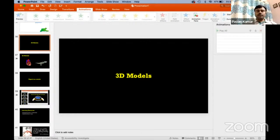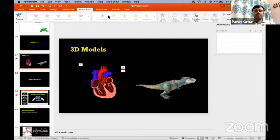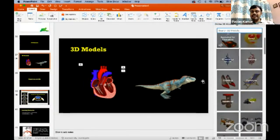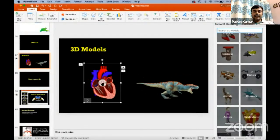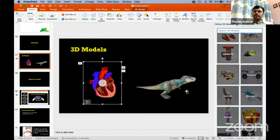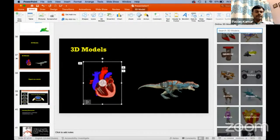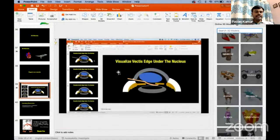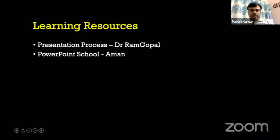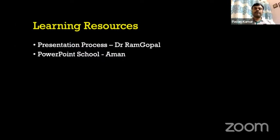A wonderful recent feature in PowerPoint is inserting 3D models. You go to Insert, click 3D Models, search for various 3D options, insert them, and can rotate and interact with them. Once everything is done, you can export it to movies as Prithvi described. For learning, I recommend YouTube channels: 'Presentation Process' by Dr. Ramgopal and 'PowerPoint School' by Aman. These teach PowerPoint features in a very easy and simple way. Thank you for giving me this opportunity.